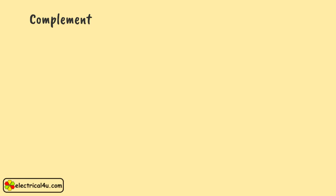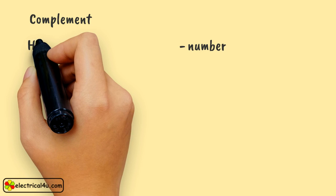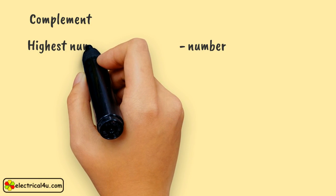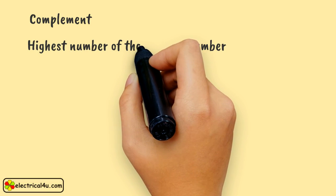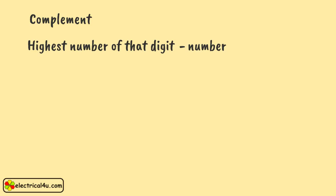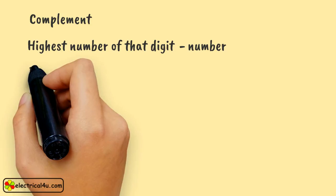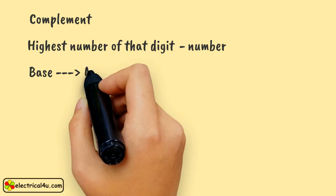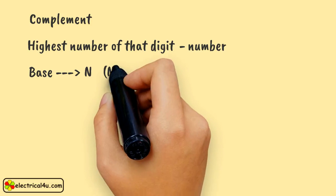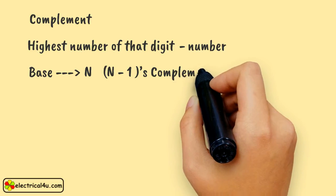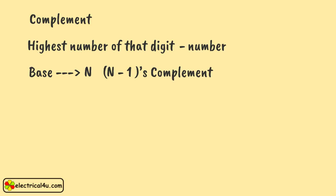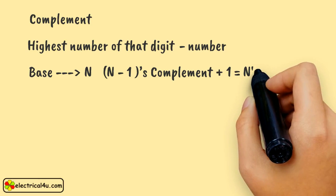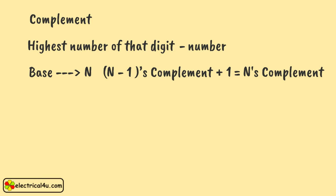The word complement in the number system means the difference of the number from the highest number of that digit. This definition can be applied to various number systems and they are named differently as well. But in general, if a number has base of n, then that is known as n-1's complement. However, if we add 1 with that value, then we will get n's complement.